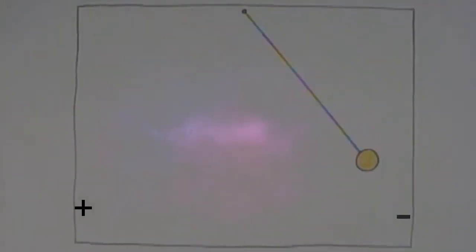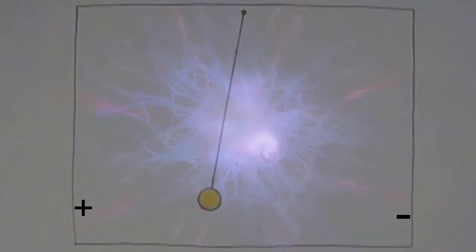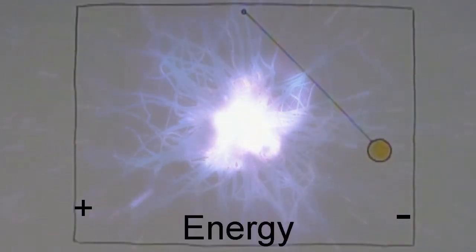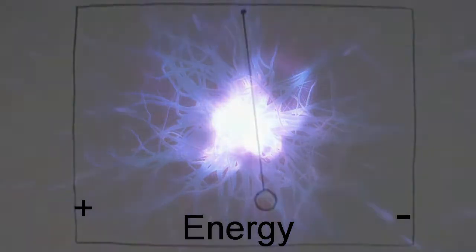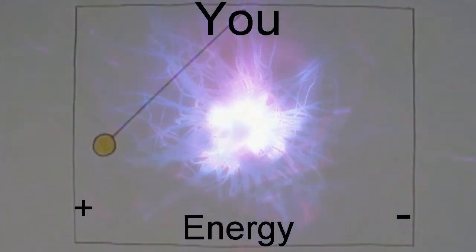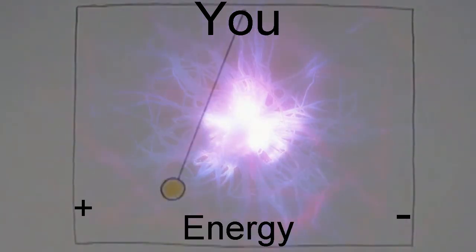Visualize a pendulum that swings between two points in time, between the positive and negative dualities, creating a vibrating wave of energy as it swings back and forth. Now realize you are the focal point of that swinging pendulum, the center point that creates the balance and allows for the pendulum to actually swing.